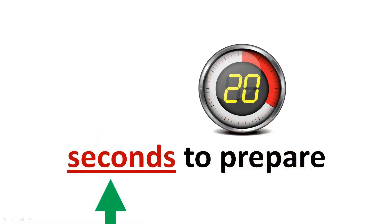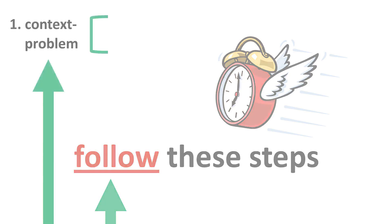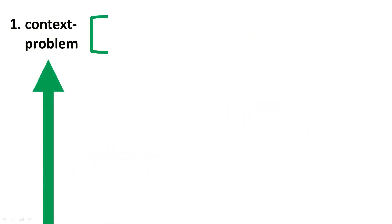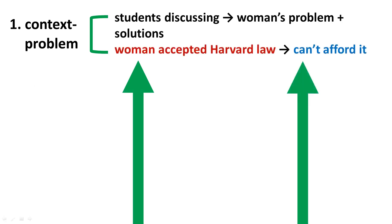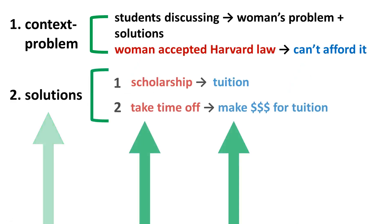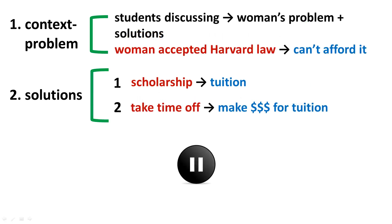Next is Step 4: preparing to speak. You will have 20 seconds to prepare your response. Because you have very little time to prepare, follow these steps. Divide your response into three sections, starting with context and problem. The context is a general statement in which you introduce the main topic. Next, summarize the problem using cause and effect. Next are the solutions — summarize the two solutions using cause and effect. Pause here to read the response map so far.